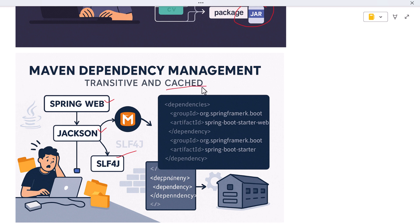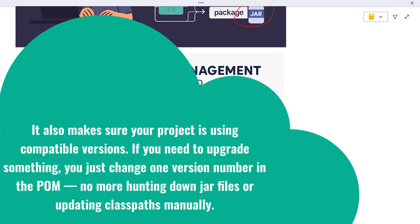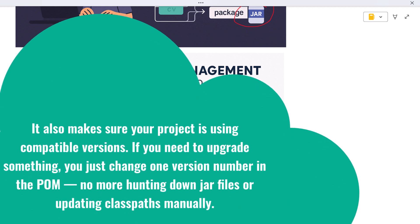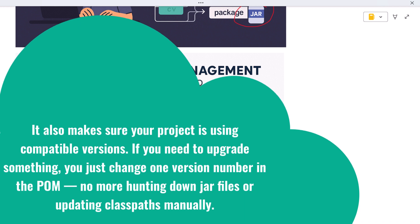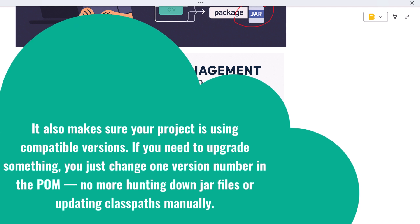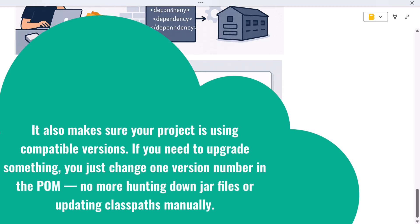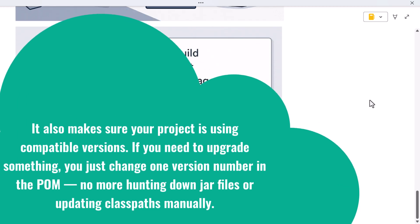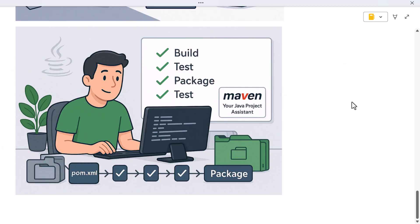And it caches those libraries locally, so you are not re-downloading them every time. It also makes sure your project is using compatible versions. If you need to upgrade something, you just change one version number in the pom — no more hunting down JAR files or updating classpaths manually. So to sum it up, Maven is like your project assistant: it keeps track of your libraries, builds your code, runs your tests, and packages everything so you can focus on writing features, not managing build chaos.